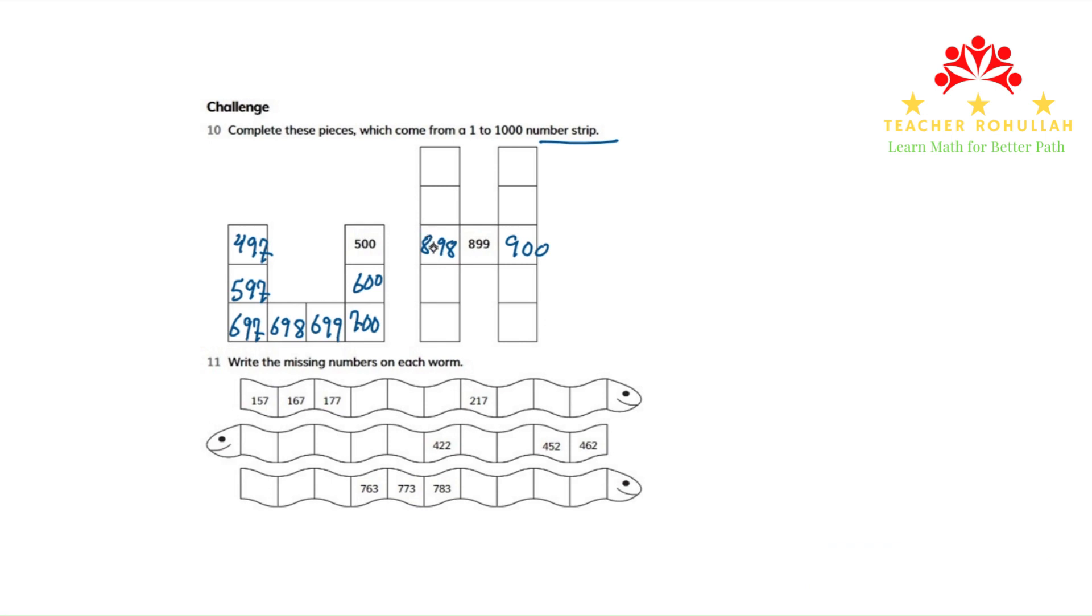Above 898, we have 798. And above it, we have 698. Below 898, we have 998. And below that, we have 1098.